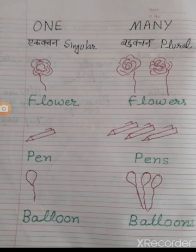So we will write it as flower. Here is more than one flower, so we will write it as flowers. Second one: one pen, so we will write pen. Here is more than one pen, so we will write pens.